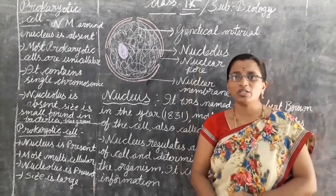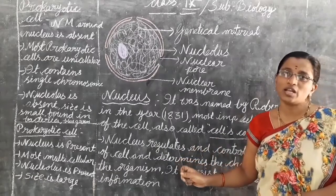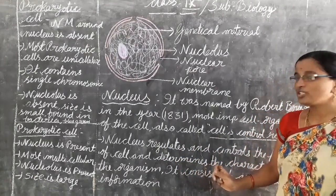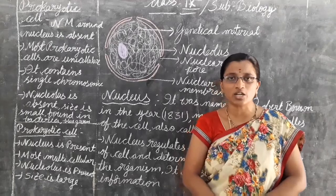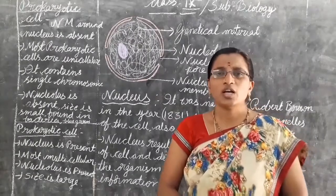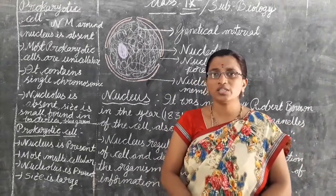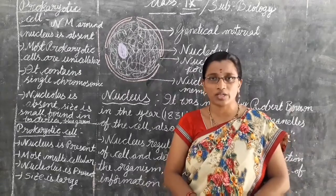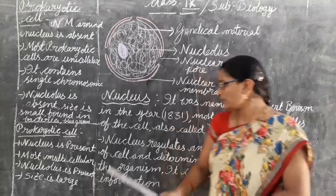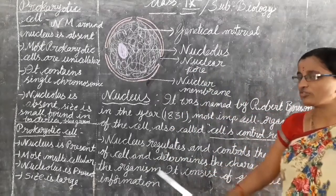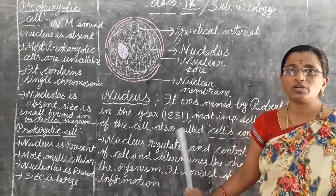The cell was discovered by Robert Hooke in the year 1665, whereas the nucleus was discovered by Robert Brown in the year 1831. The nucleus is the largest and most important cell organelle — larger than mitochondria, Golgi apparatus, endoplasmic reticulum, cytoplasm, and cell membrane. The nucleus regulates and controls the function of the cell and determines the characteristics of the organism, which is why we call it the control room of the cell.